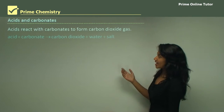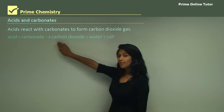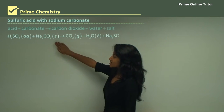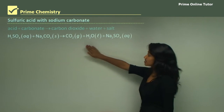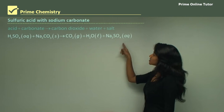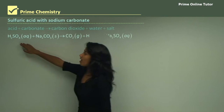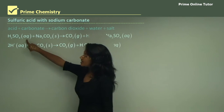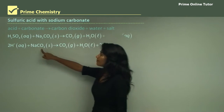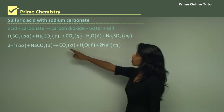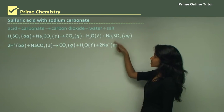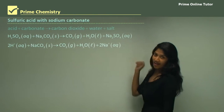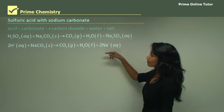Acids react with carbonates to form carbon dioxide, water, and a salt. For example, sulfuric acid reacting with sodium carbonate forms carbon dioxide gas, water, and sodium sulfate. Sulfuric acid and sodium sulfate are aqueous, but sodium carbonate is a solid, so it won't ionize. The hydrogen ions come from the sulfuric acid, and the sodium ions come from the sodium sulfate in solution. The sulfate ions cancel out as spectator ions, giving us the net ionic equation.